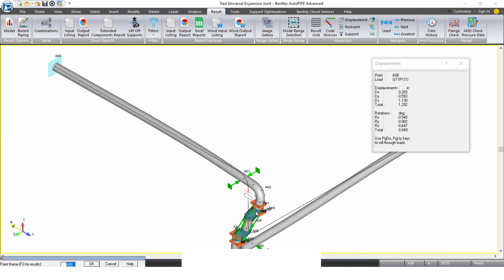The tie rods do have an axial stiffness input and that's why they are allowed here to expand a bit even though there are tie rods placed on it. It's having less than half an inch in each direction as a summary, but it's allowed to move in all those directions.